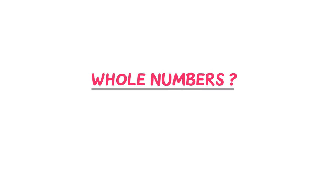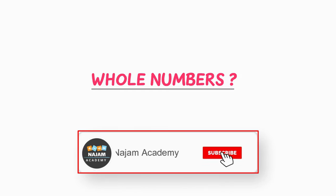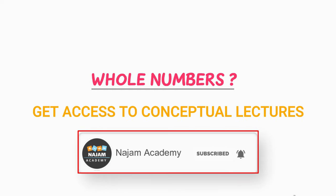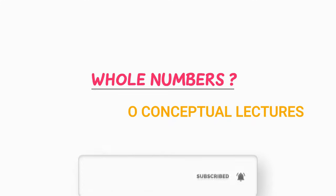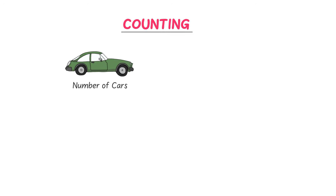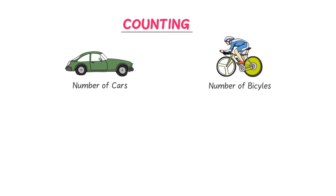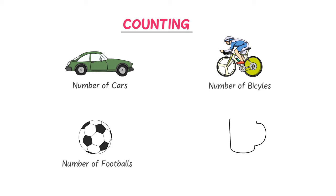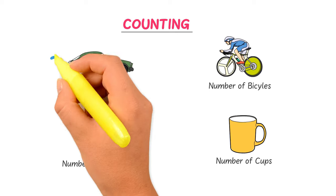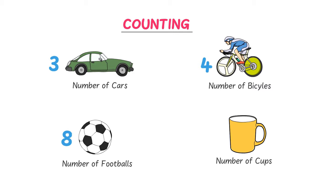What are whole numbers? We know that in our daily life, we do different types of counting. For example, we count the number of cars, the number of bicycles, the number of footballs, the number of cups, etc.